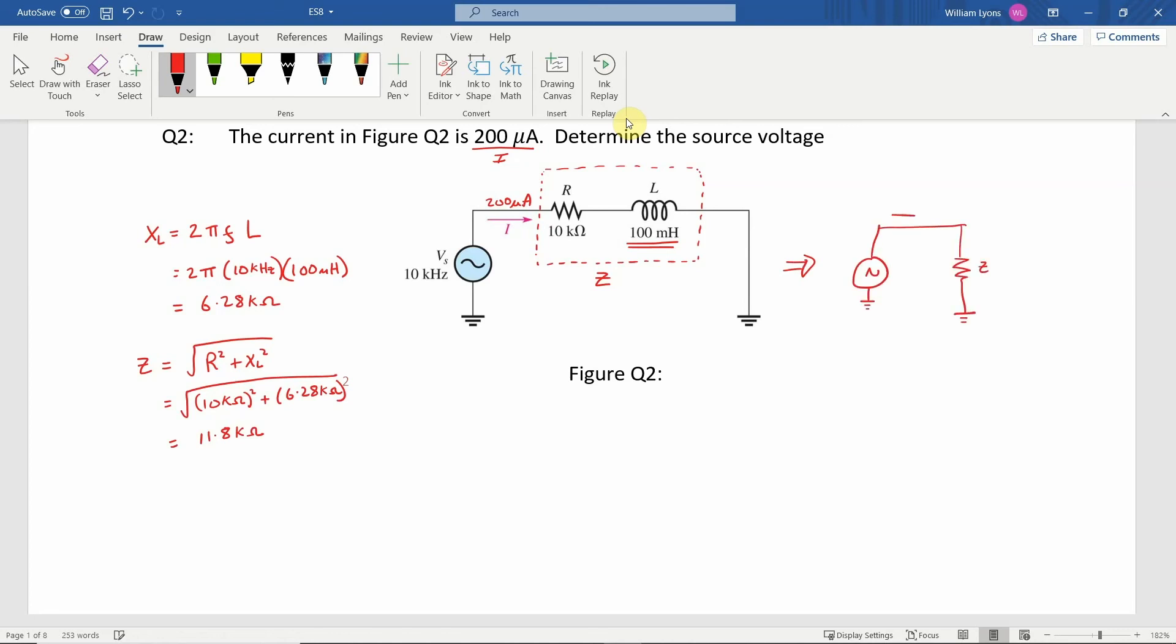So this effectively becomes a circuit like this, Z, we are told the current here is 200 microamps, and the impedance here is equal to 11.8 kilo ohms. We want to calculate I, so we want to determine the source voltage.